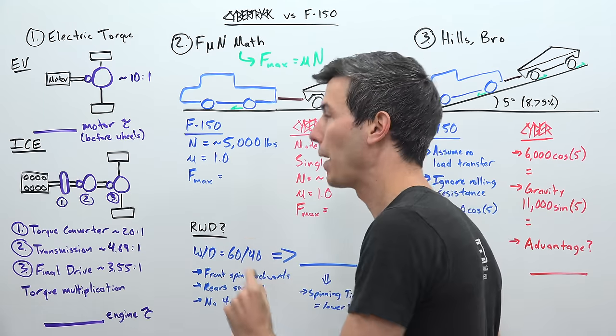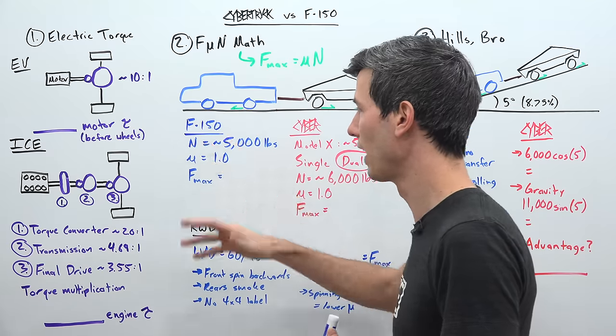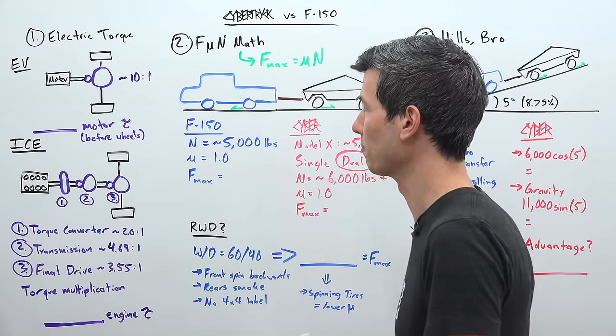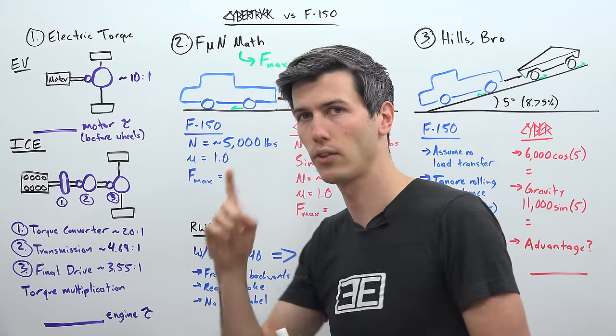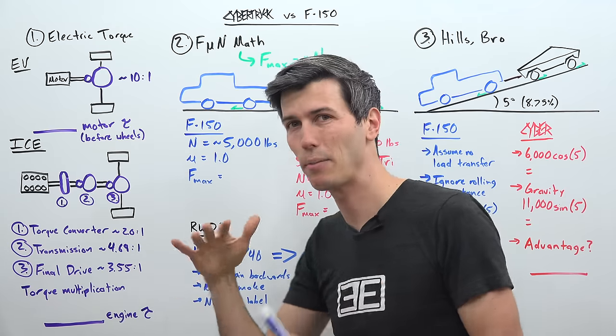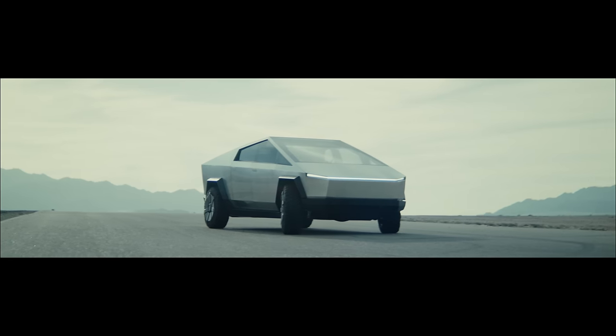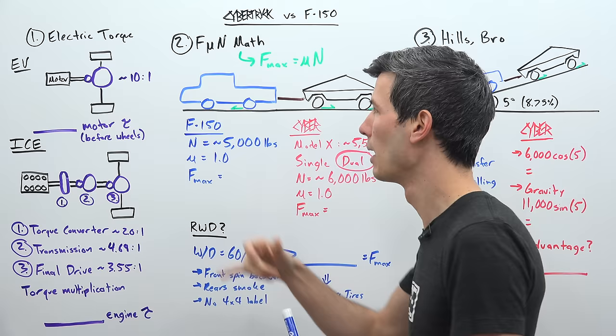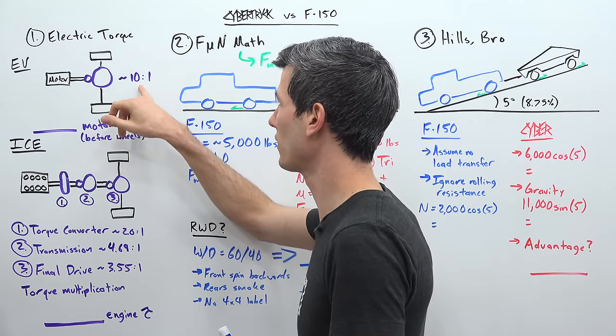So let's compare the Tesla Cybertruck versus a Ford F-150 and look at the gearing advantages here. With an electric car, typically you're going to see a single reduction gearbox, one speed, and for Teslas that gearbox is generally about a 9 to 10 to 1 gear ratio. They might use something slightly more aggressive for this because it's a truck, but regardless we're going to go with an assumption of something close to what they typically do with a 10 to 1 reduction.